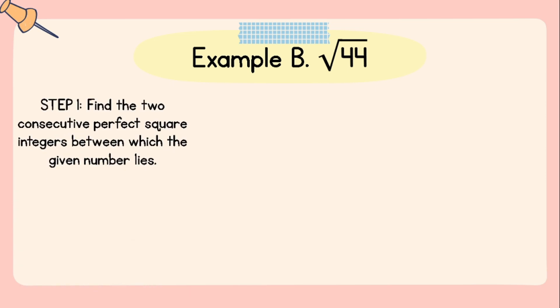Example B: square root of 44. Step number one: find the two consecutive perfect square integers between which the given number lies. Since 44 is not a perfect square, its principal root is irrational. We need to find the two perfect square integers between which 44 lies — these are 36 and 49. Therefore, square root of 44 lies between square root of 36 (which is 6) and square root of 49 (which is 7).